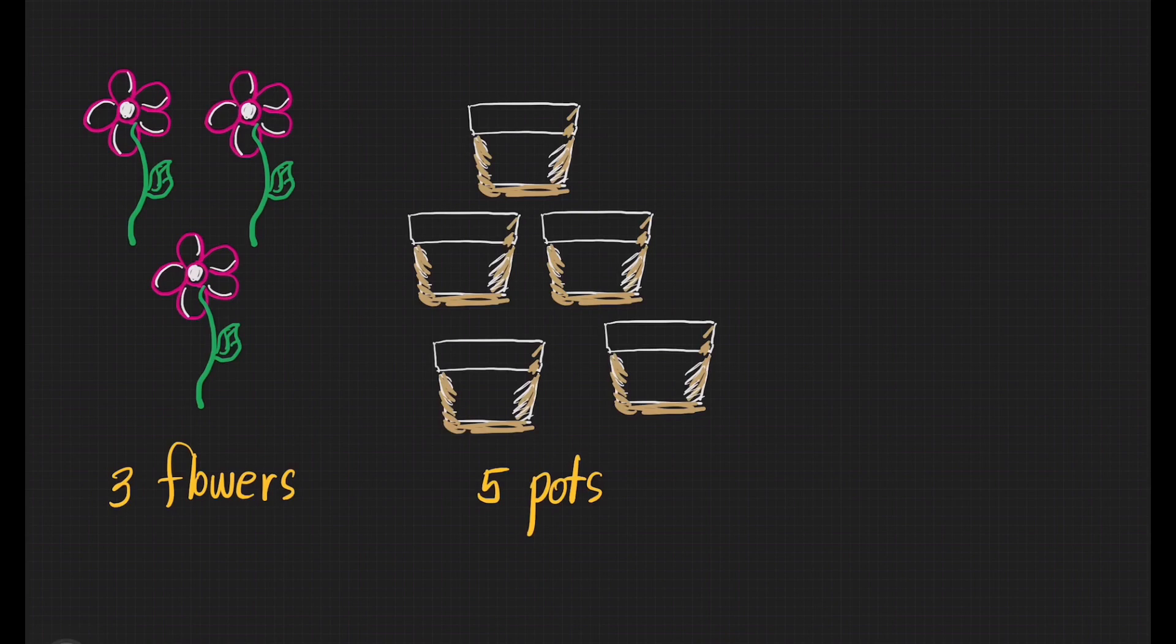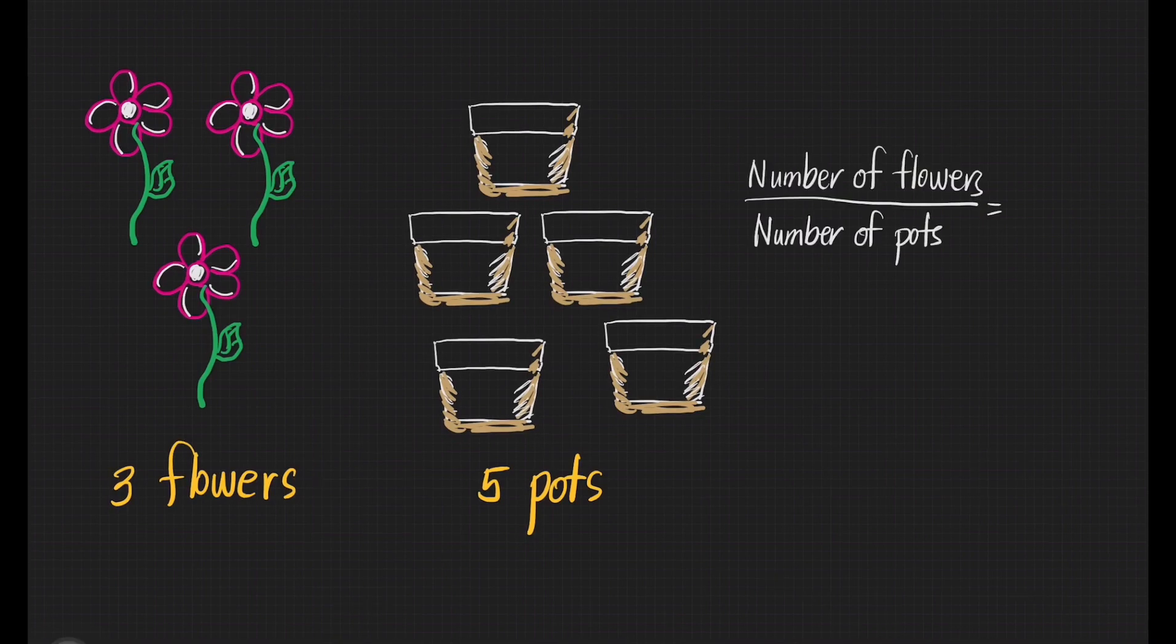We can also express ratio as a fraction. Suppose we have 3 flowers and 5 pots. Written as a fraction, the ratio of the number of flowers to the number of pots is 3 is to 5. So 3 is to 5 is equal to 3 over 5, or 3 fifths.